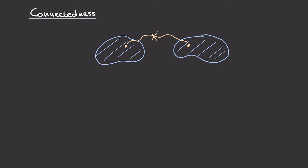However, in the case of manifolds, these two notions will turn out to be equivalent. So if our spaces are sufficiently nice, then this property of connectedness we'll see in this video will turn out to be the same as path connectedness, which we'll look at in the next video.